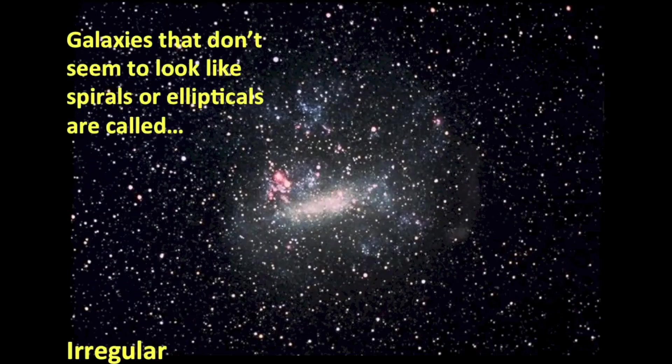There's another classification for galaxies — ones that don't have a disk shape or an elliptical shape. An example is the Large Magellanic Cloud, which orbits the Milky Way Galaxy. We call these irregular galaxies.